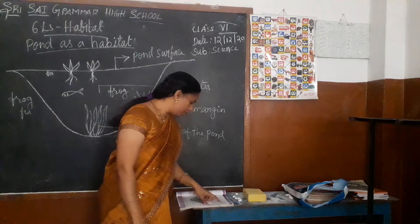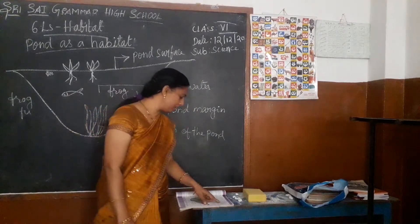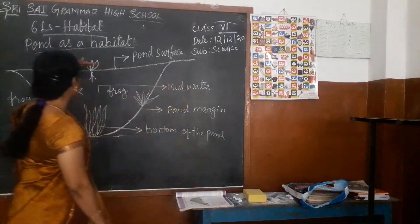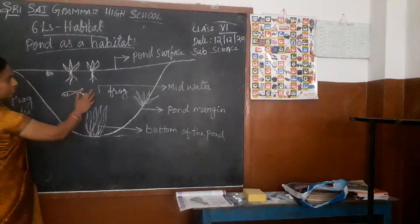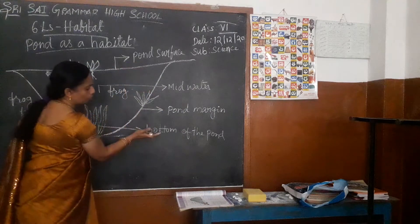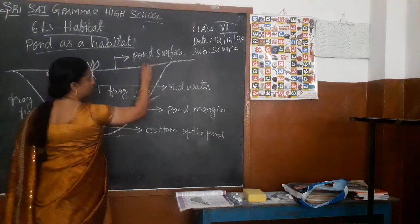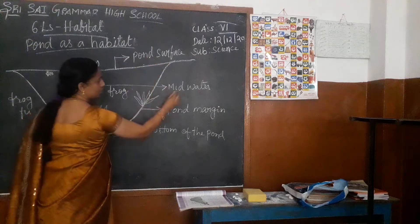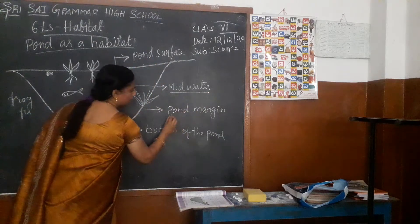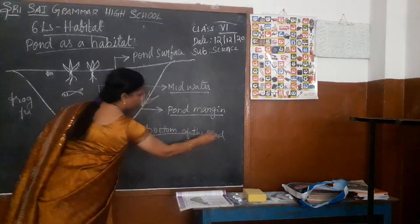To study them more closely we need to see the different regions in the pond. So in the pond we can have different regions. We can divide it into four parts: pond surface, mid water, pond margin, and bottom of the pond.